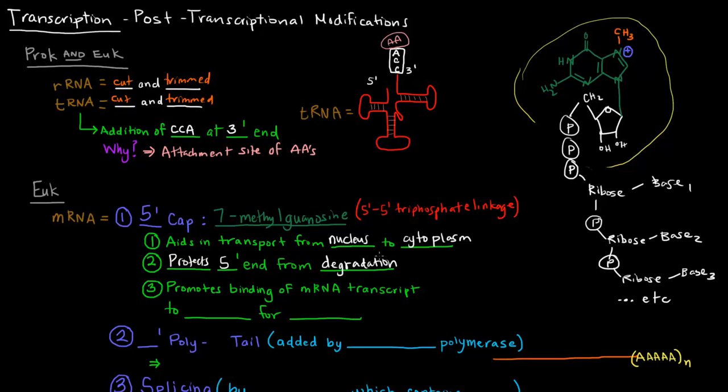Nucleases break down nucleic acids, so any exonucleases that want to act on this end here won't be able to because of this 5' cap. Another thing that it does is that it promotes the binding of the mRNA transcript to the ribosome for translation. The mRNA needs to be translated on a ribosome, and this 5' cap helps it do that.